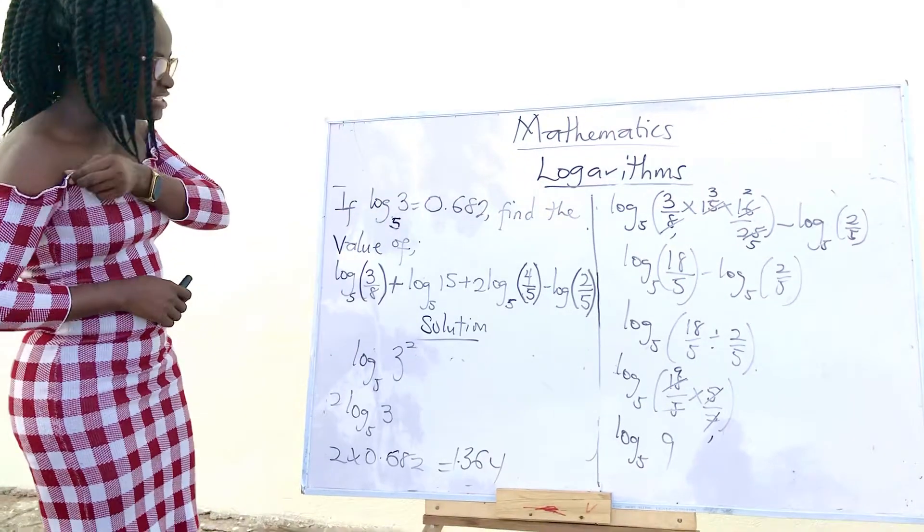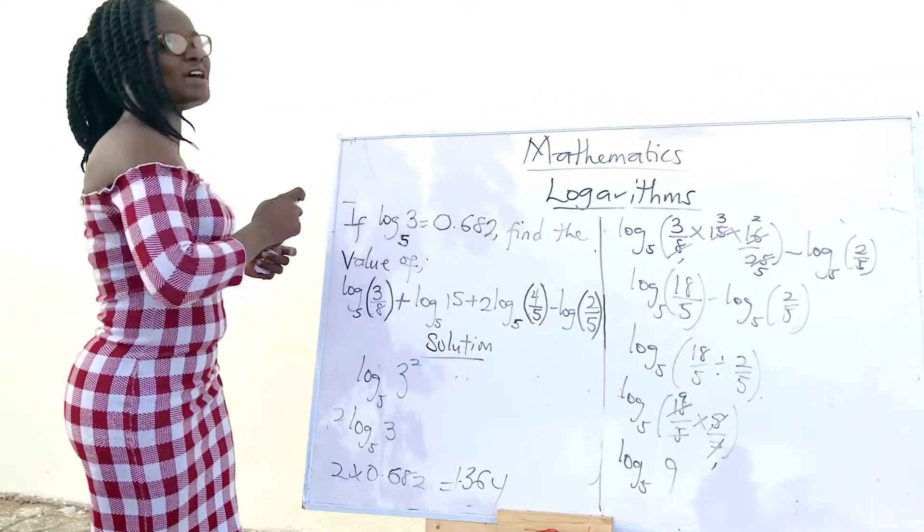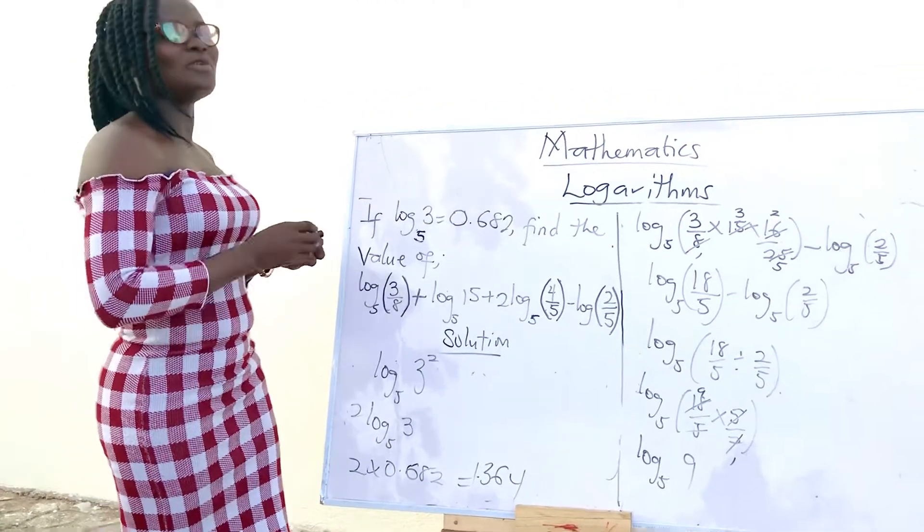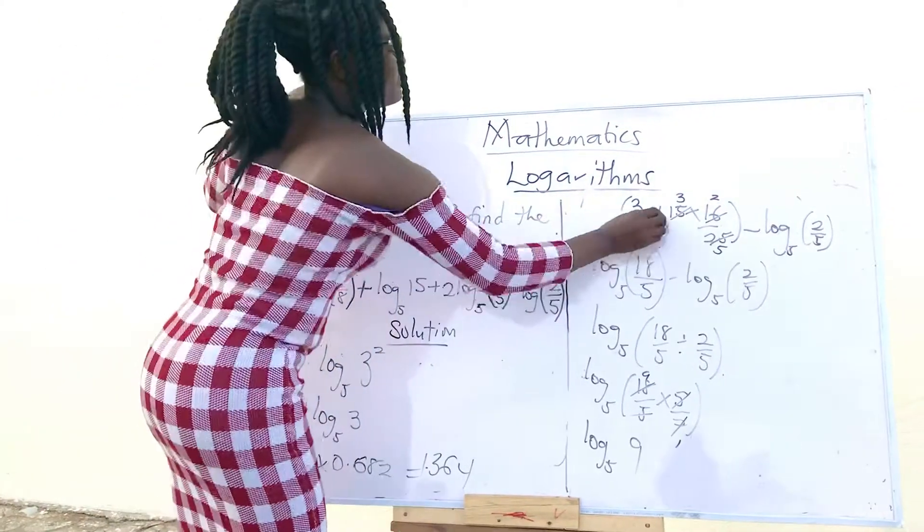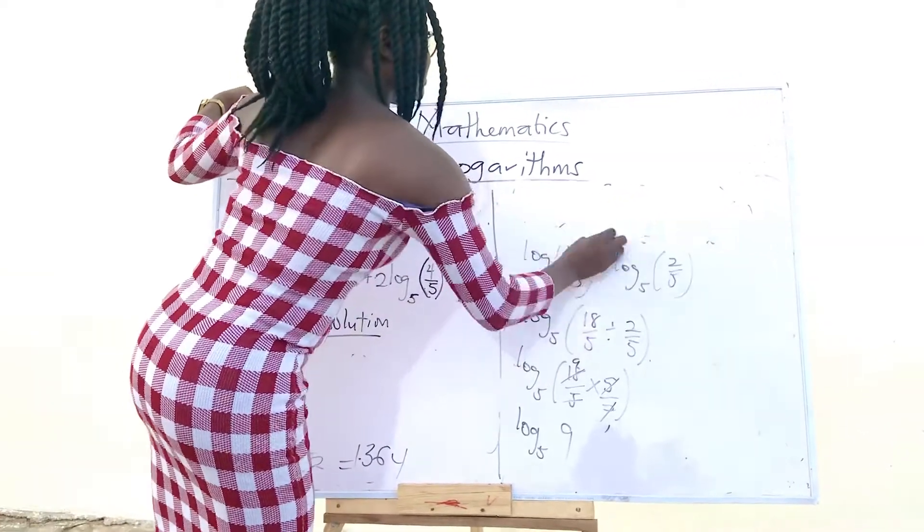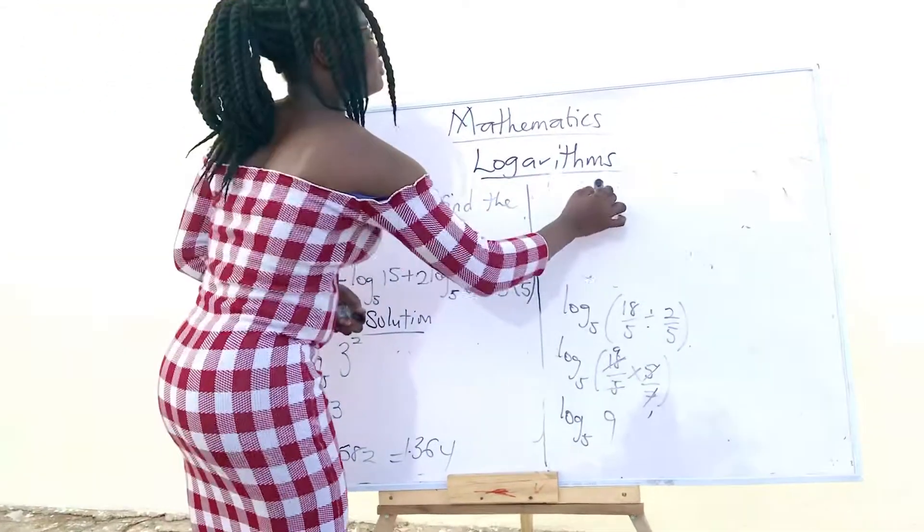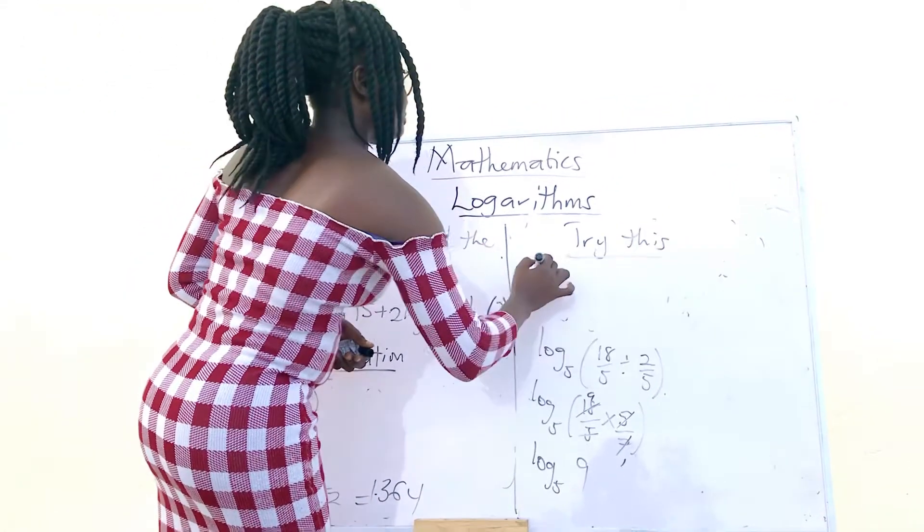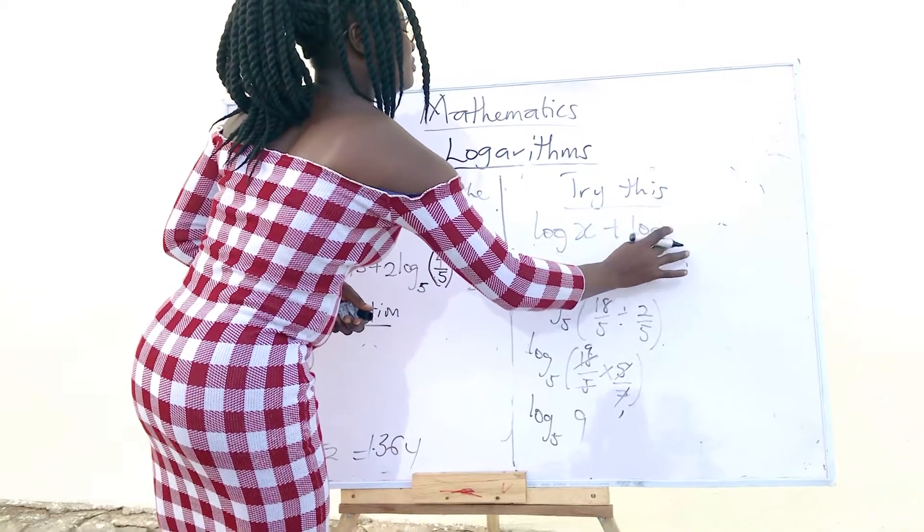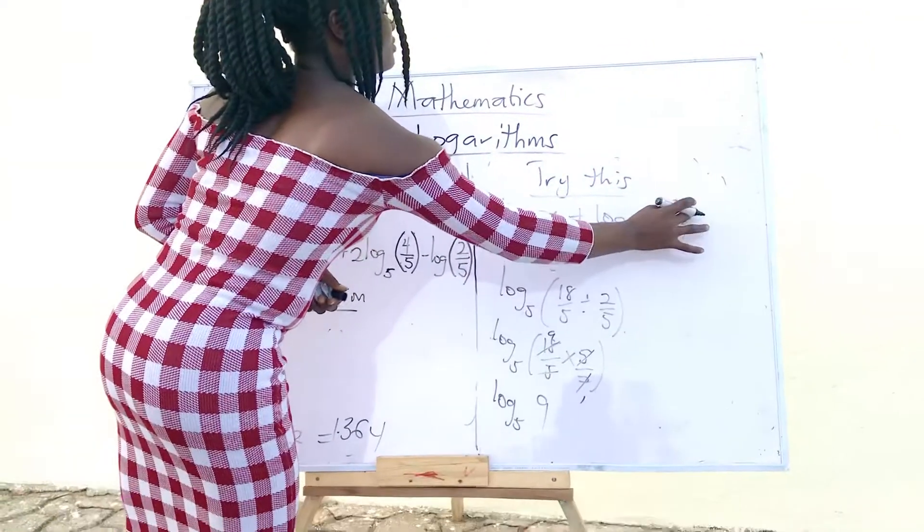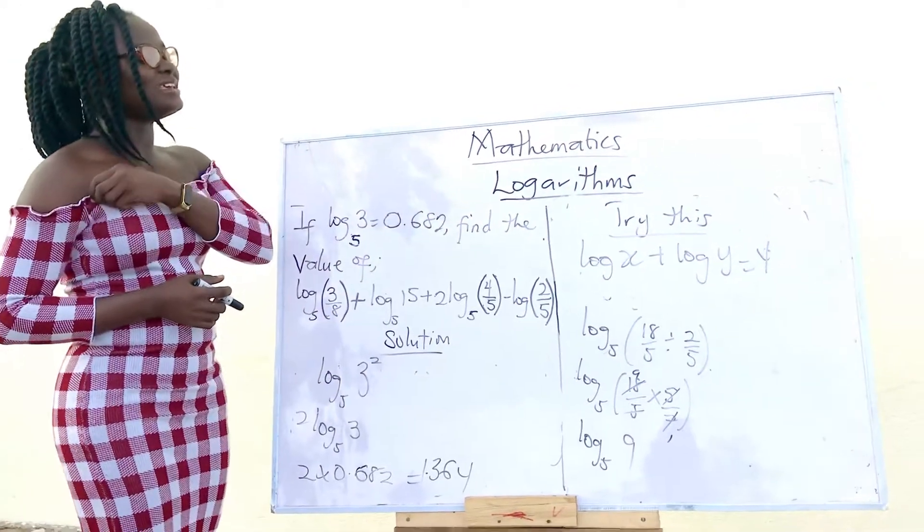So, in solving questions like this, mostly you have to break everything down to get the value given to you. So, let me give you one example and you try your hands while you are at home. Log x plus log y equals 4. Don't forget to apply the laws.